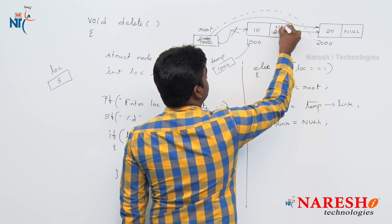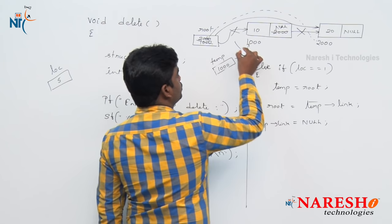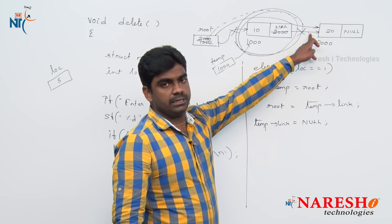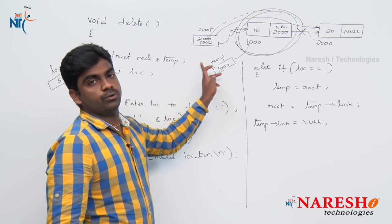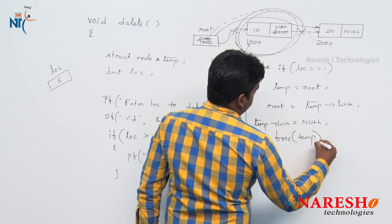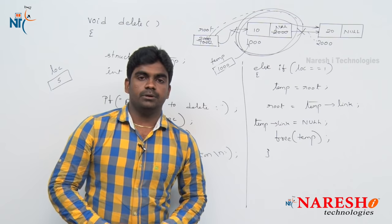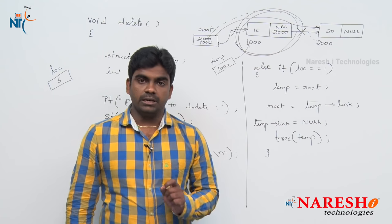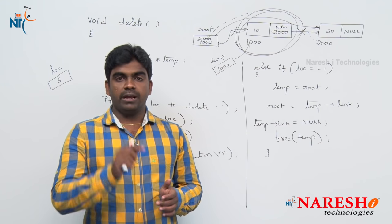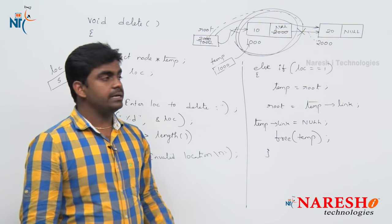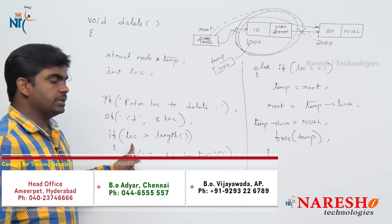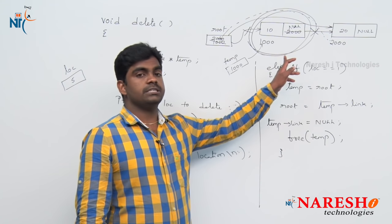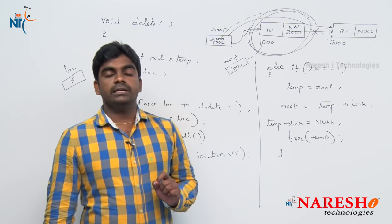Now the right side connection is also gone, this node is free — no one is pointing to it from the left or right. To release it, we call free(temp). So if location is greater than length it is invalid, else if location equals 1 we execute this first-node deletion logic using the temp variable.